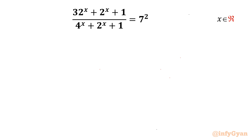Welcome back to InfiGam, my dear friends. Today in this video we are going to solve one very interesting and challenging rational exponential equation: (32^x + 2^x + 1) / (4^x + 2^x + 1) = 7², and we have to find out real solutions only.